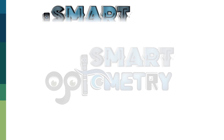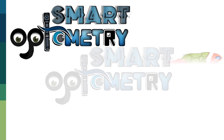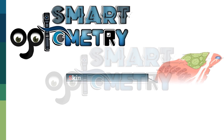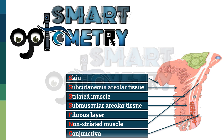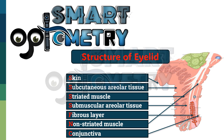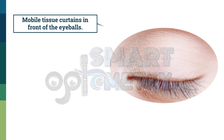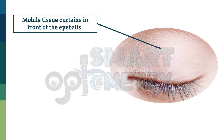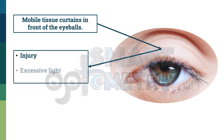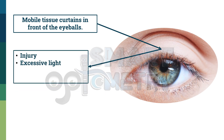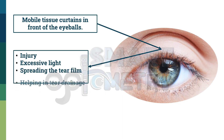Welcome to the Smart Optometry Academy. Today we'll dive deep into the anatomy and structure of one of the most vital yet often overlooked parts of our body — the eyelids. The eyelids are mobile tissue curtains in front of the eyeballs that protect the eyes from injury and excessive light, while also spreading the tear film and aiding in tear drainage through the lacrimal pump system.